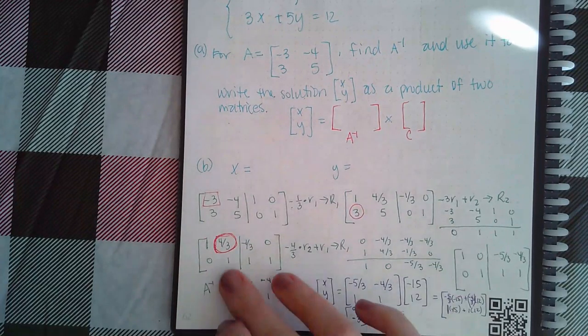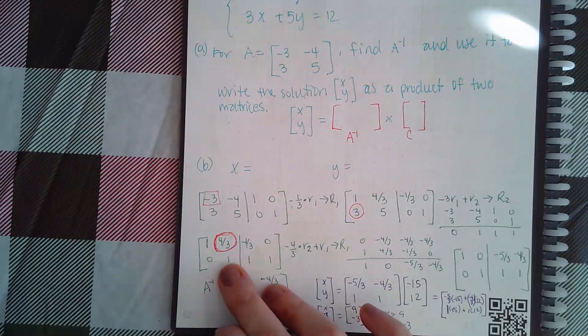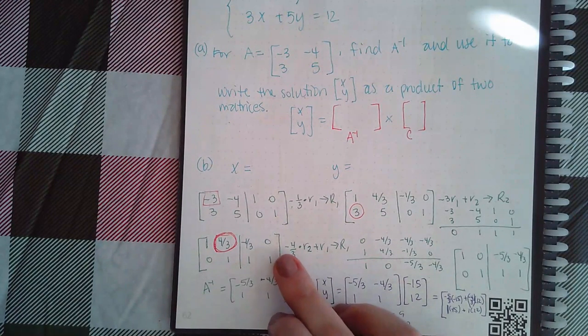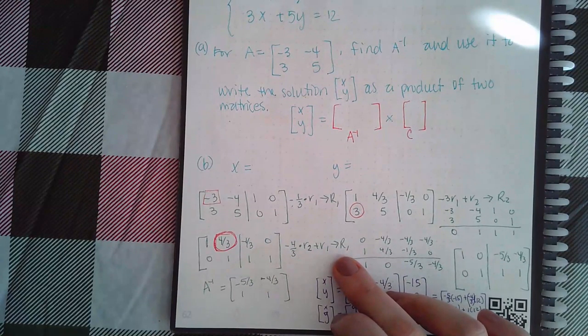So to do that, I needed to get this guy to be a negative four-thirds. So I did negative four-thirds times row two plus row one to get the zero in row one I need.